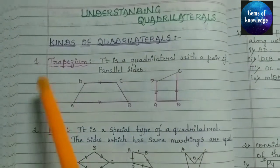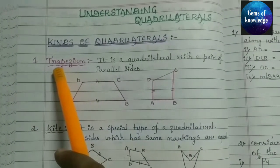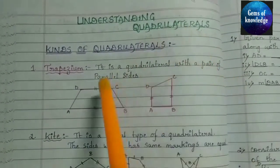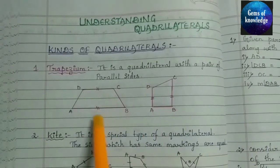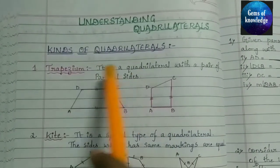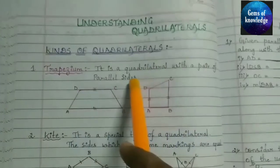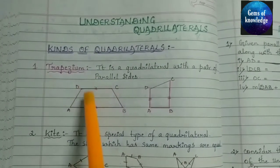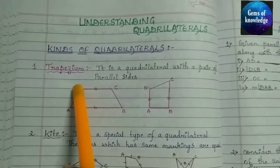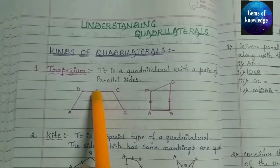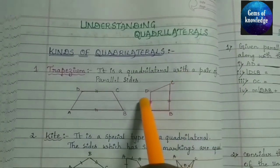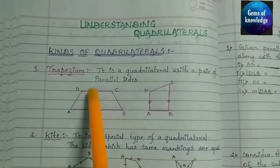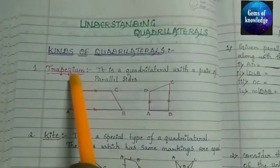The first type of quadrilateral is a trapezium. A trapezium is a quadrilateral with a pair of parallel sides. Here you can see in the figure: ABCD is a trapezium because AB is equal to DC. Similarly, another ABCD is also a trapezium because AD is equal to BC. So at least one pair of parallel sides must be present.